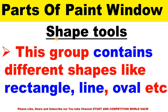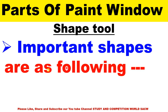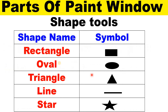Next is the shape tool. If anybody asks you what is the shape tool, this group contains different shapes like rectangle, line, oval, star, etc. The important shapes are: rectangle, oval, triangle, line, and star. These are the shape tools.